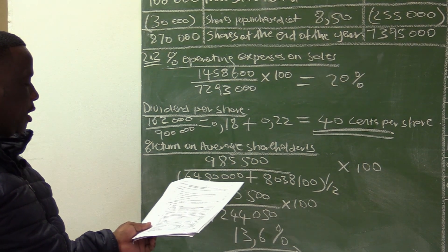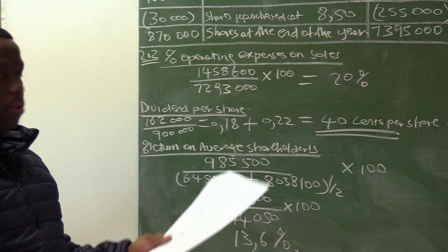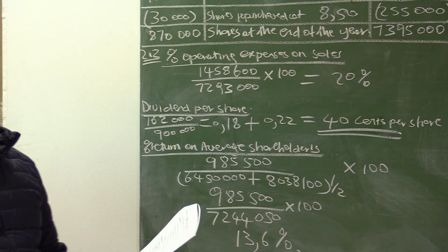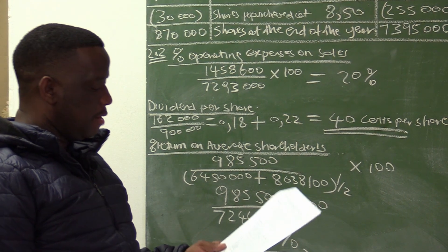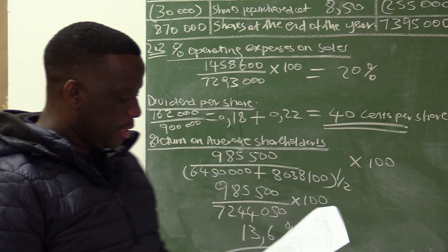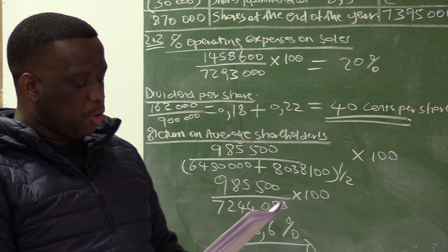The formula for return on average shareholders' equity is net profit after tax over average shareholders' equity. Average shareholders' equity equals shareholders' equity at the beginning plus shareholders' equity at the end, divided by 2.